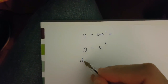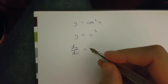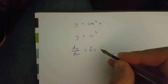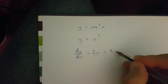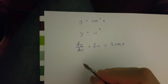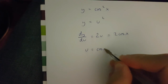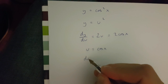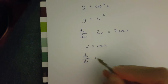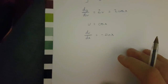If this is the case, then dy over du is going to be equal to 2u, which is 2 cos x. Now if u is cos x, then du over dx is going to be equal to minus sin x.